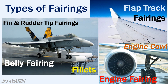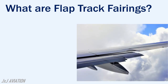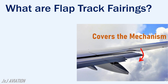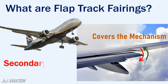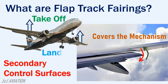Now let's look at what flap track fairings are and what is installed inside them. A flap track fairing is basically a structure which covers the mechanism that extends or retracts the flaps. Flaps are secondary control surfaces which increase the lift created by the wings. Flaps are used when the aircraft is flying at low speeds during takeoff or landing.